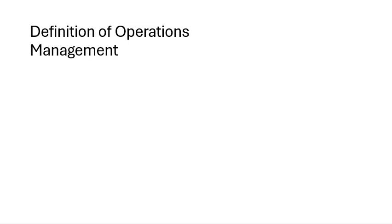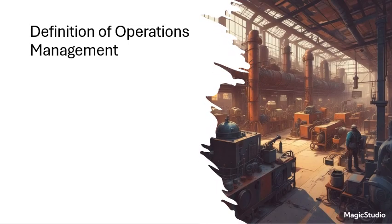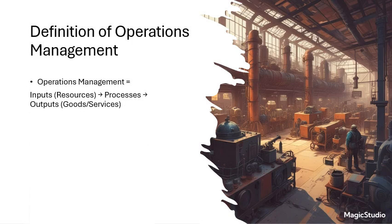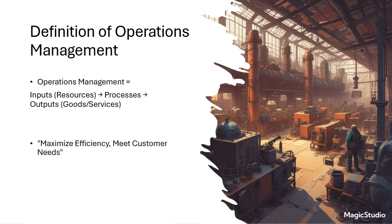Operations management, or OM, refers to administration of business practices to create the highest level of efficiency possible. It involves managing resources like people, machines, technology and processes to transform inputs to outputs, i.e. goods or services. The ultimate goal is to maximize efficiency while producing products that meet customer demand.